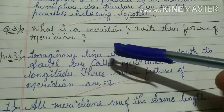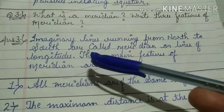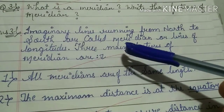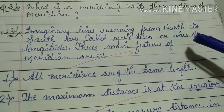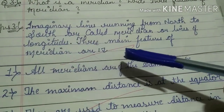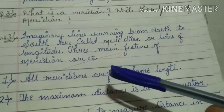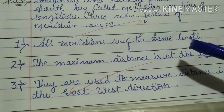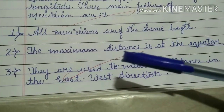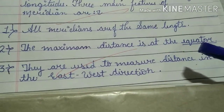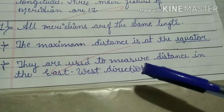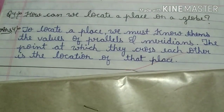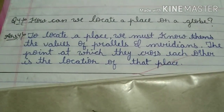Next question: What is a meridian? Write three features of meridians. Answer: Imaginary lines running from north to south are called meridians, or lines of longitude. Three main features of meridians are: Number one, all meridians are of the same length. Number two, the maximum distance is at the equator. Number three, they are used to measure distance in the east-west direction.